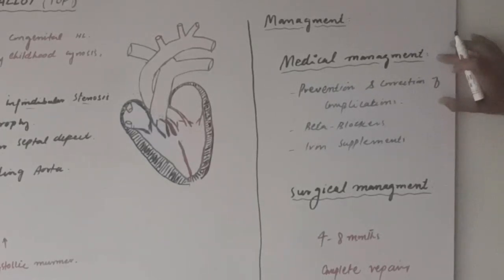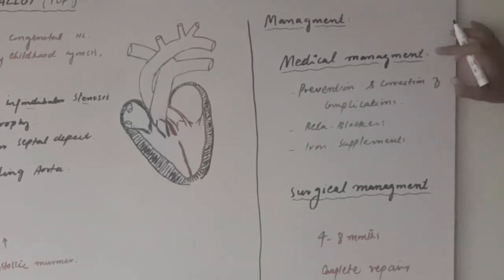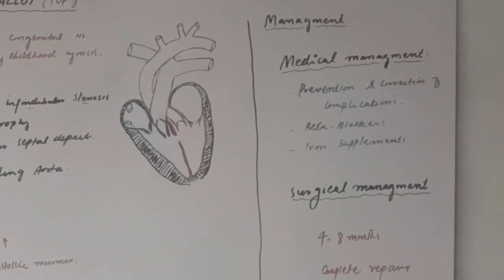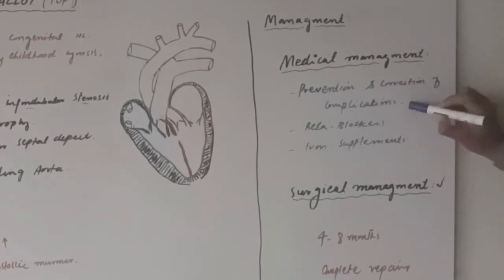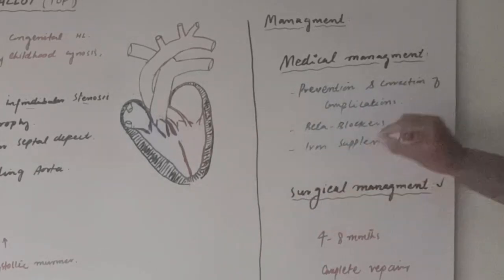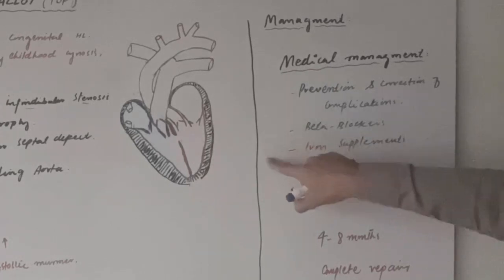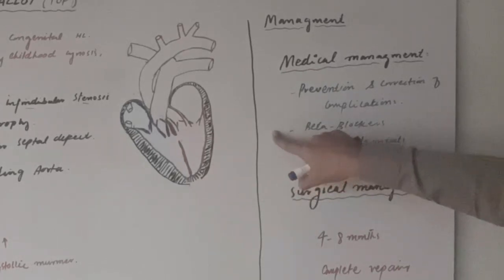This patient can be managed by two methods: medical management and surgical management. Medical management is done only for prevention and correction of complications and to relieve symptoms, while surgical management is the definitive treatment. By medical management, we prevent and correct complications — for example, if the patient is going into cardiac failure, we try to prevent it. We give beta blockers because during activities like crying, systemic vascular resistance decreases.